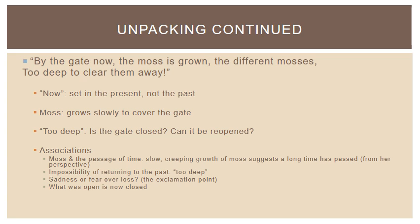Thinking about our associations — what's evoked, what ideas can we get from this — the sense of the moss and the passage of time, this slow creeping growth of moss, suggests that a long time has passed, at least from her perspective. And the idea of the impossibility of returning to the past — things are too deep. There's the suggestion of her sadness or fear over loss, that exclamation point, as well as the repetition. What was open is now closed. Something has changed, there's been a turning point. These are all ideas we can get from looking at and examining the language in context.